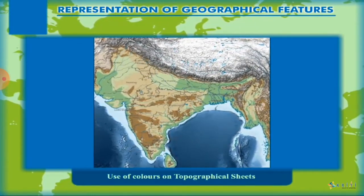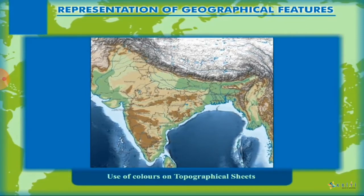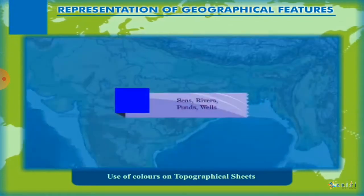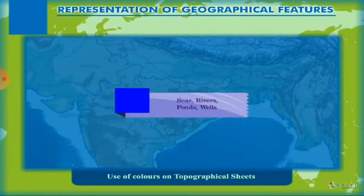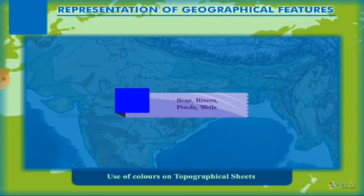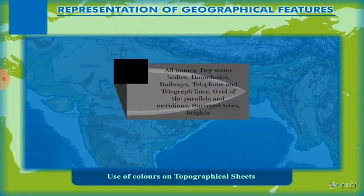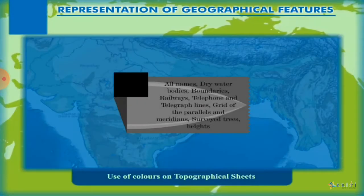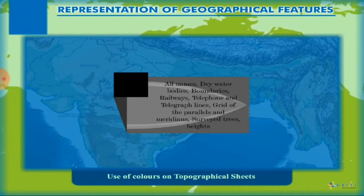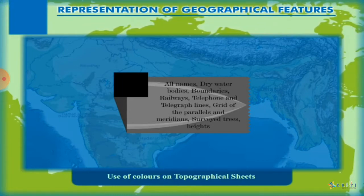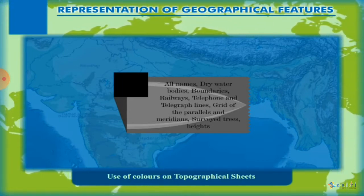Many colors are used on the topographical map to represent certain physical, economic, or cultural features. Blue color is used to show all physical features associated with water, such as sea, river, pond, wells, etc. Black color is used for showing names of dry water bodies, boundaries, railways, telephone lines, telegraph lines, grid parallels, surveyed trees, and heights.